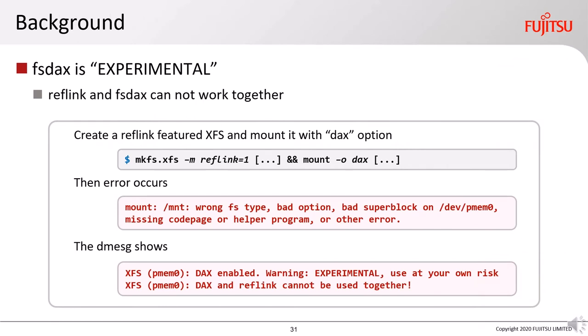Here is the background of the issues we need to solve. Currently, FSDAX is still in experimental status because reflink and FSDAX cannot work together. When we try to use them together — create a new XFS file system with reflink enabled and mount it with DAX option — an error message is shown. A dmesg investigation reveals: 'DAX on XFS is experimental. It cannot be used together with reflink.' So what are reflink and FSDAX, and why can't they work together?